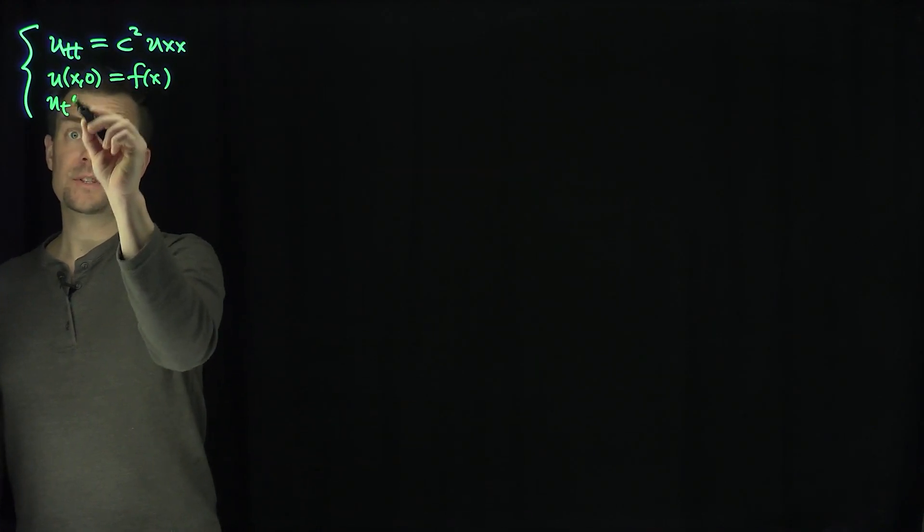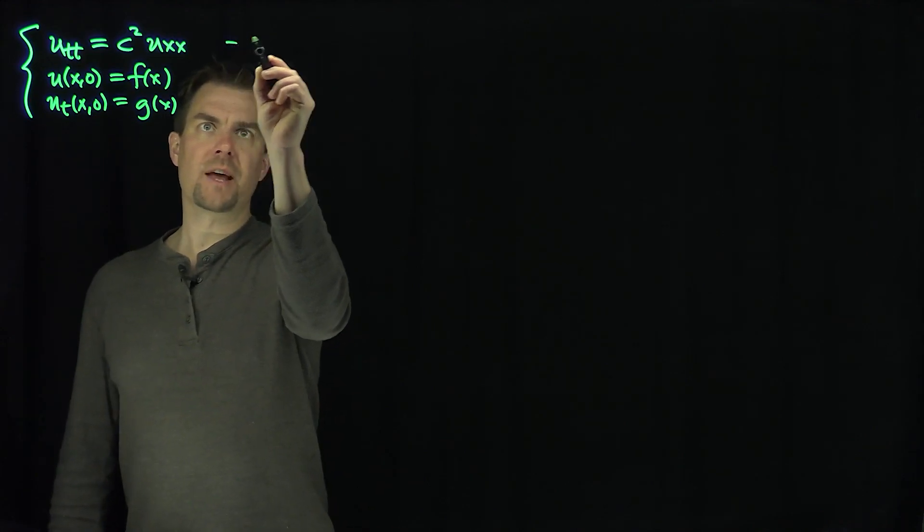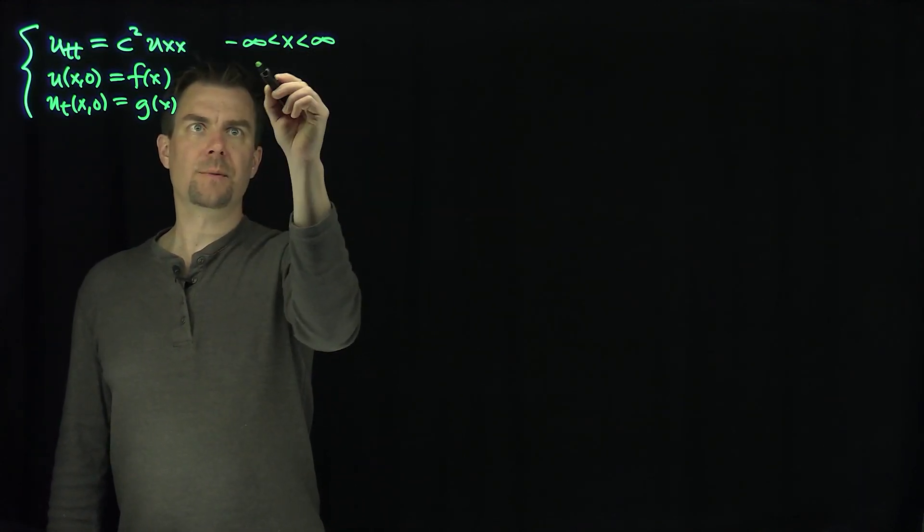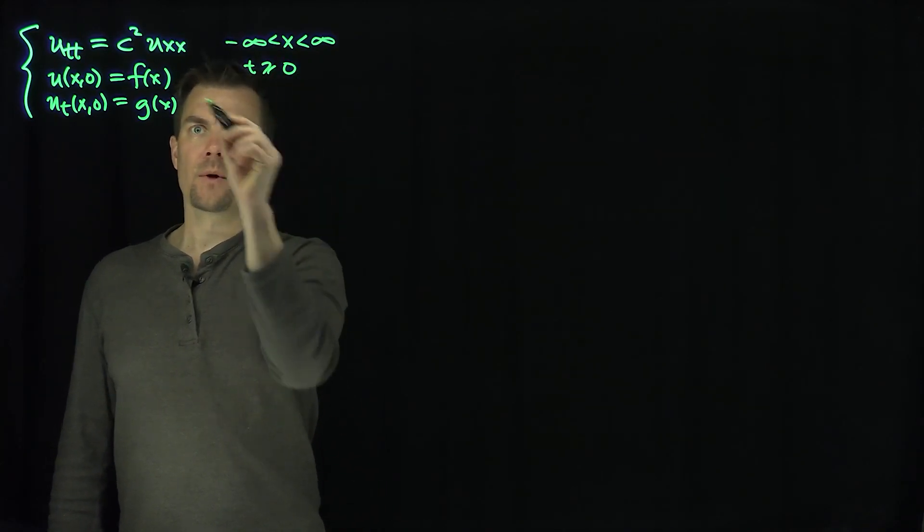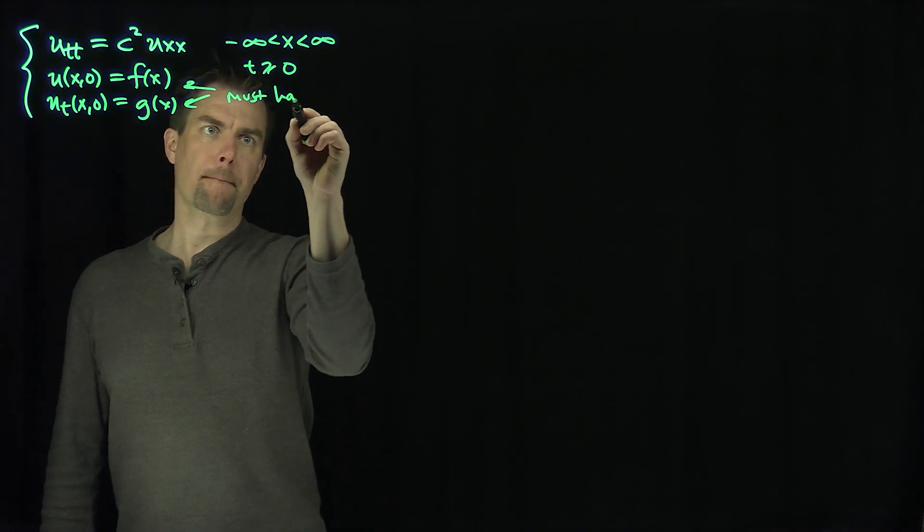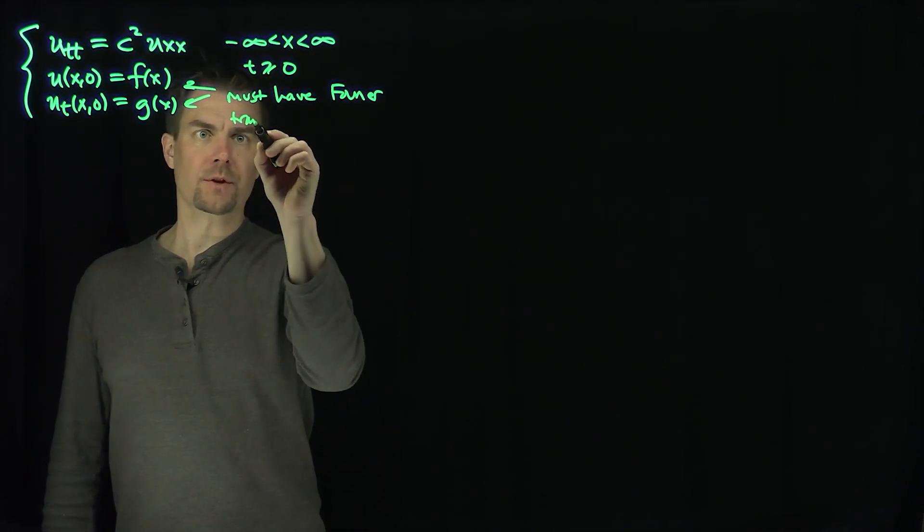And then Ut of x, 0 is a function g of x. Our domain over here is going to be negative infinity less than x less than positive infinity, and t is going to be greater than or equal to 0, and I want these functions to have Fourier transforms, must have Fourier transforms for this problem.